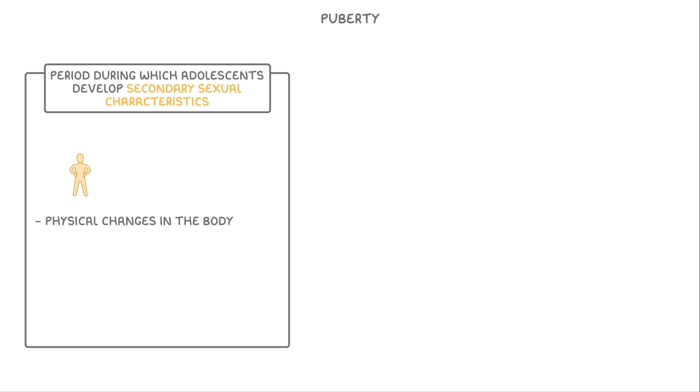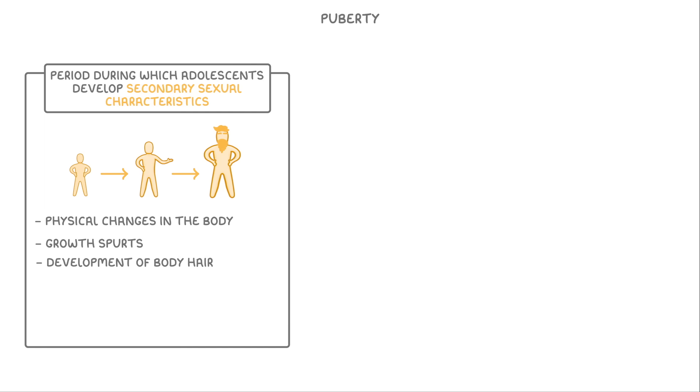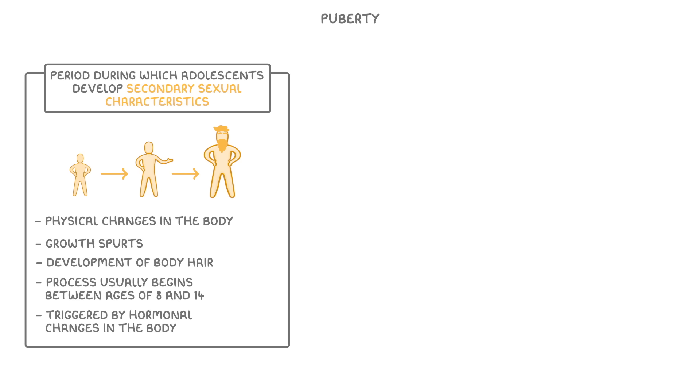Let's start with puberty. Puberty is the period during which adolescents develop secondary sexual characteristics, which refers to physical changes in the body, like growth spurts and the development of body hair. This process usually begins between the ages of 8 and 14 and is triggered by hormonal changes in the body.